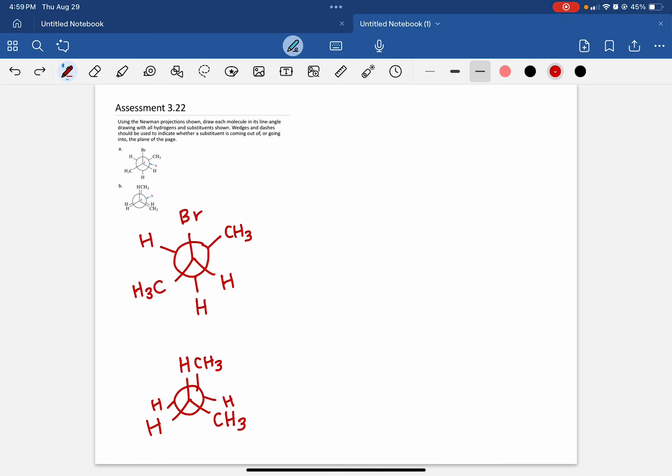So what they want us to do is create a line angle drawing and use the wedges. As a reminder, anything on a dashed wedge is going behind the page and anything with a solid wedge is coming in front of the page. Anything on just a regular line, that's a bond that is in plane with the page.